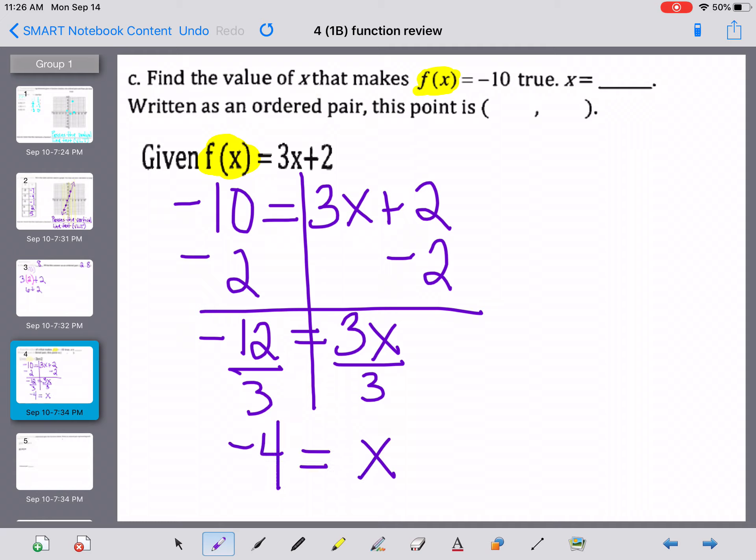And again, so here it says find the value of x that makes f of x equal negative 10 true, so x equals negative 4. And then when we fill that into our ordered pair here, x is negative 4 and then we get the negative 10.